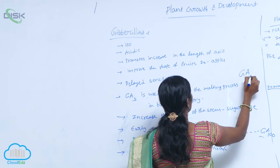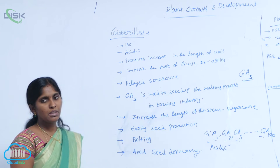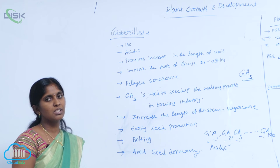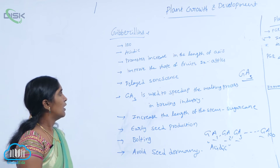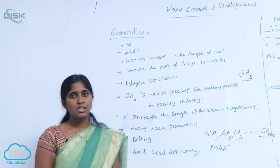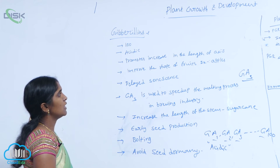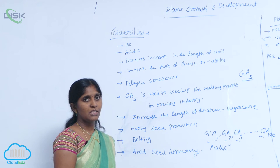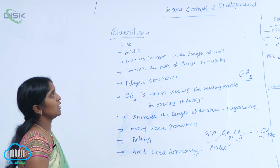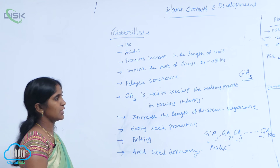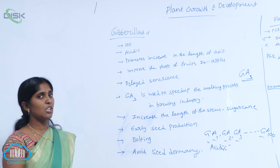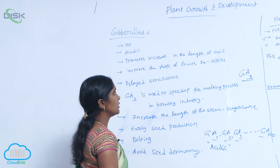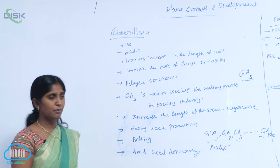Gibberellins have many applications, specially in agriculture and horticulture fields. They show physiological responses — they promote the increase in the length of the axis, meaning they are growth promoters. They also promote the shape of the fruits, specially in banana, and fruit elongation like banana fruits.